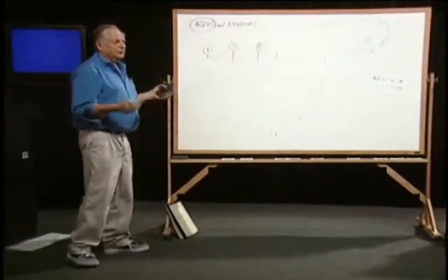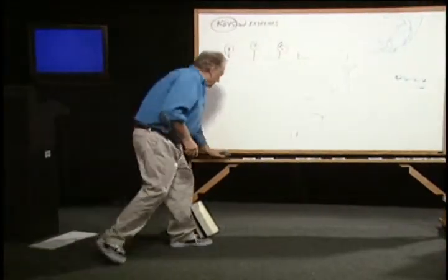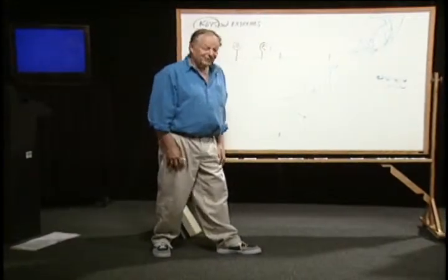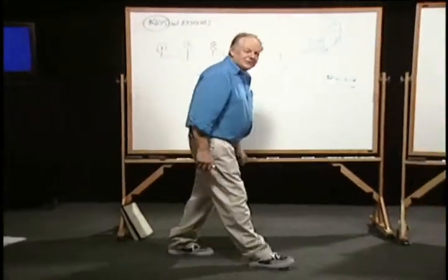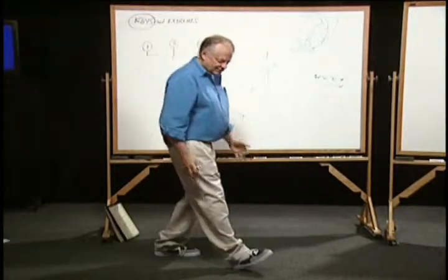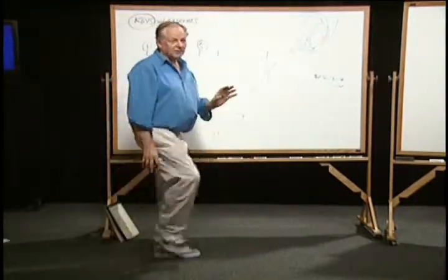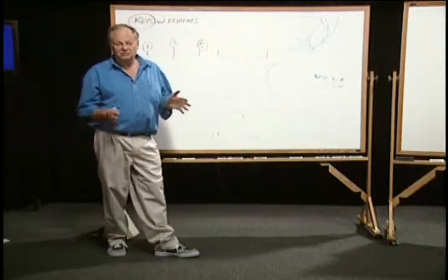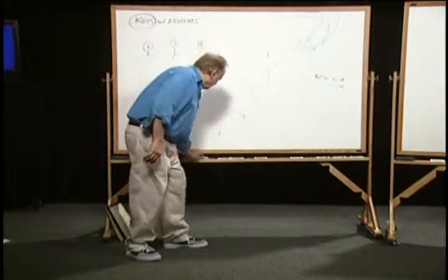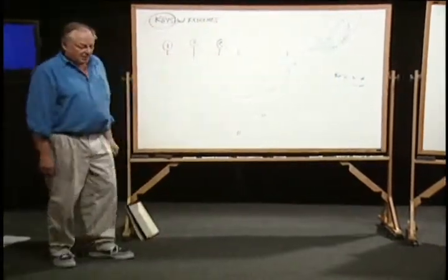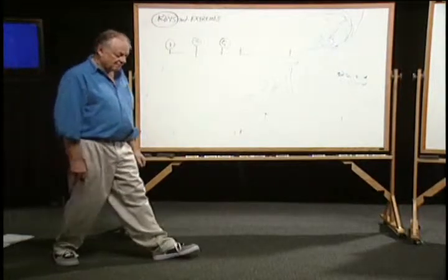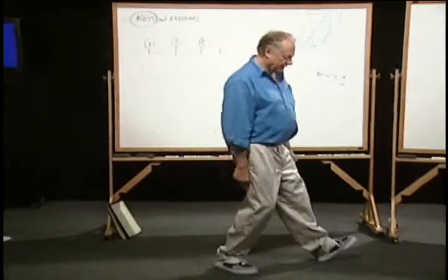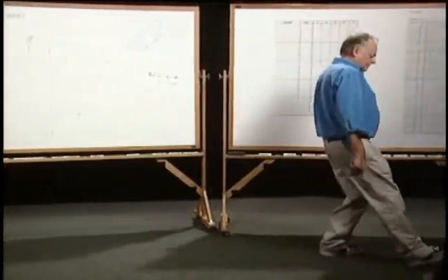We're going to come to the next complication, which is the drawing between drawing one and the first contact — between the key and the first contact — which is going to be the passing position in a walk, or the breakdown. It's the middle position. In a walk, we do the steps first: draw this, draw that, draw this one — and they're all extremes.